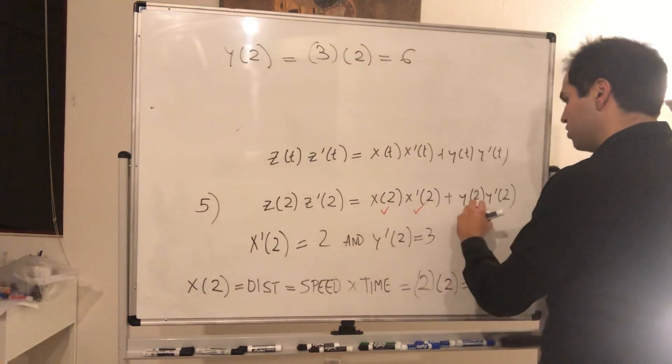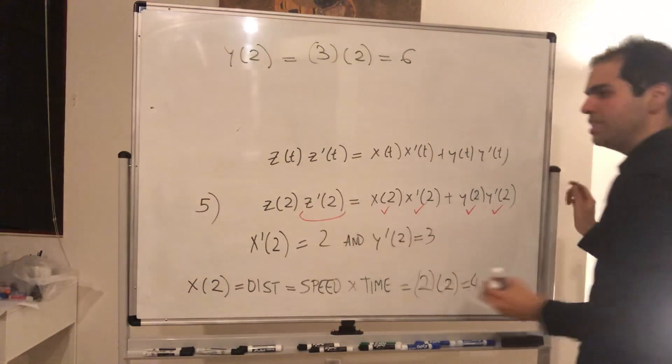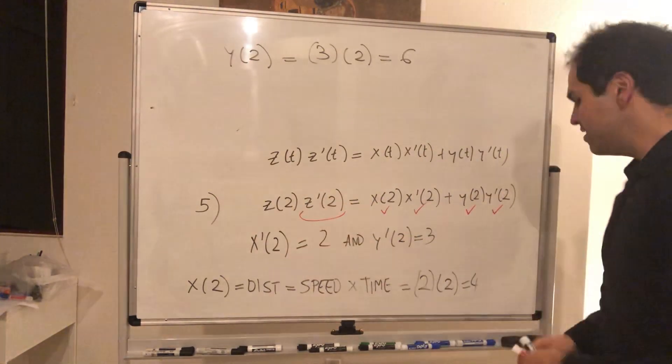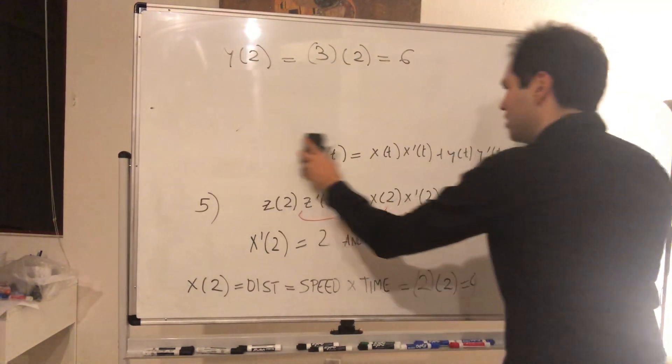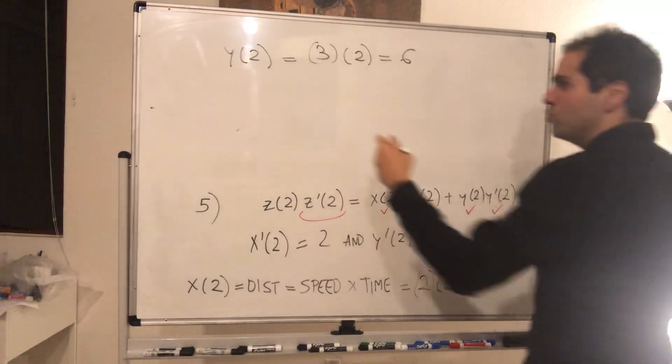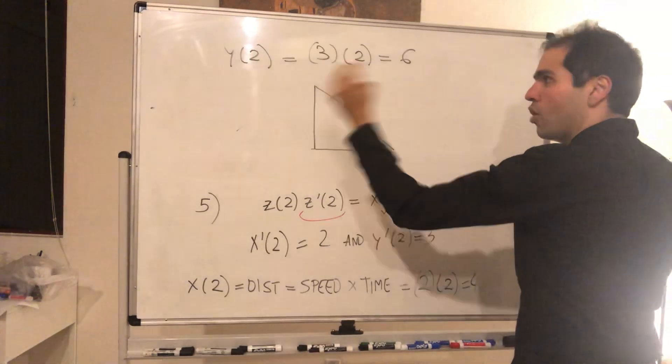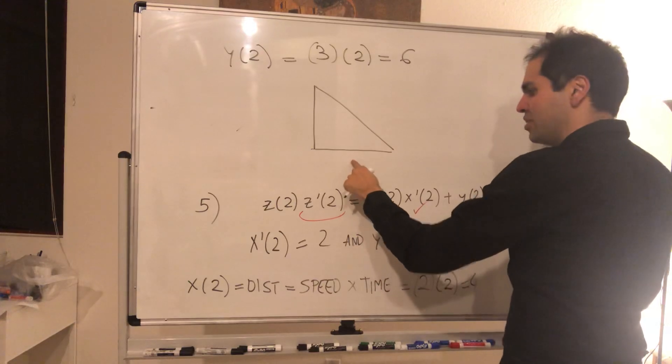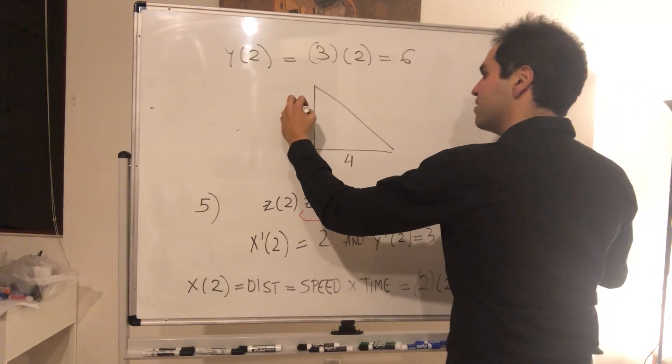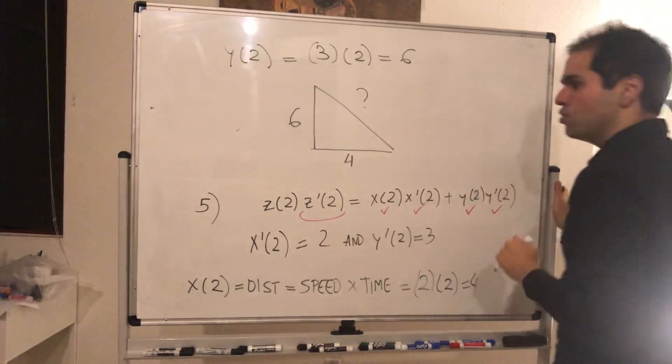So that's very good. So we know x of two that we just figured out, we know x prime of two which is two, we know y of two, we know y prime of two. This is what we need to find. So last but not least, all we need to do is find z of two. But now remember, what's useful in related rates is to sort of draw the picture again, but with our variables plugged in. So now x of two, again that's four, y of two is six.